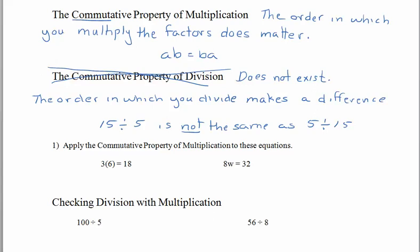Your job is to use the commutative property of multiplication and apply it to those equations. The commutative property of multiplication says the order in which you multiply the factors doesn't matter, so rewrite these equations with the factors in a different order. For 3 times 6 equals 18, we reorder the factors — the 3 and the 6 — so it becomes 6 times 3 equals 18; the 18 doesn't move. For 8 times w equals 32, the 8 and the w are the factors. It looks a little strange to write w times 8 equals 32, but it's not wrong. Normally we like the coefficients written before the letters, but we can write the factors in any order we choose.